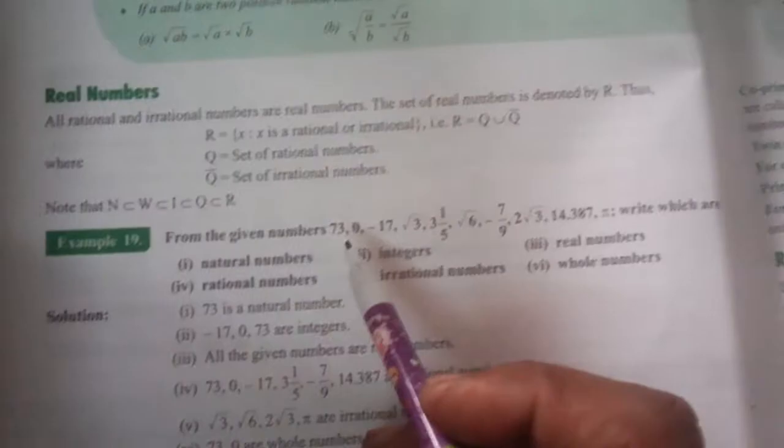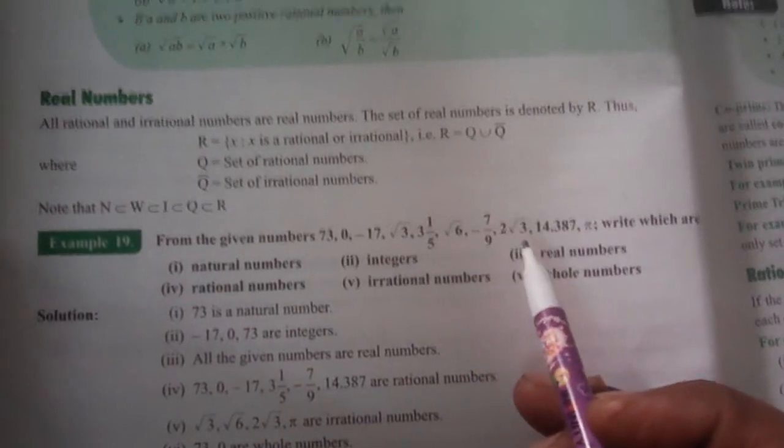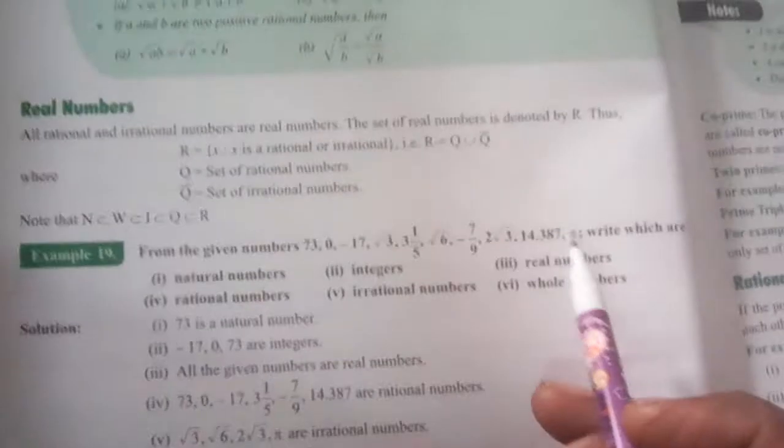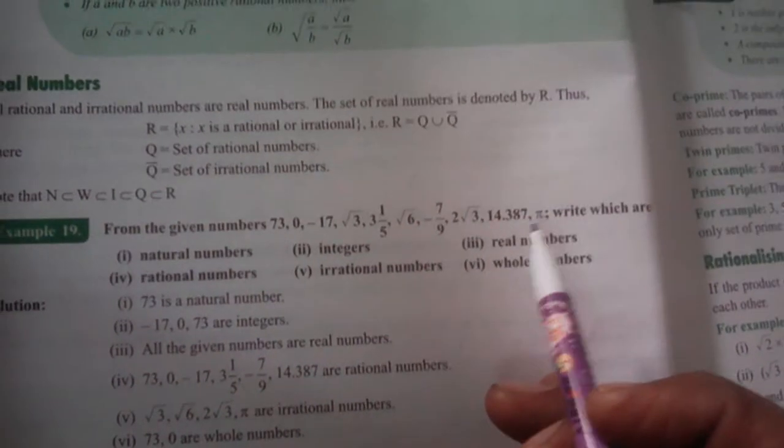Here is an example given: 73, 0, -17, √3, 3/5, √6, 7/9, 2√3, 14.387, and π.